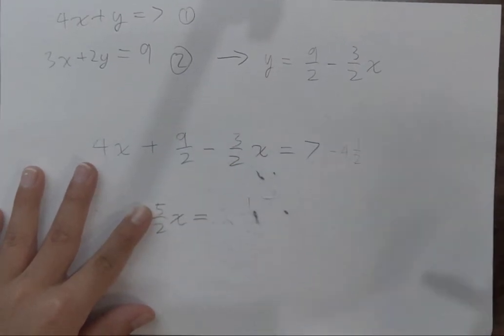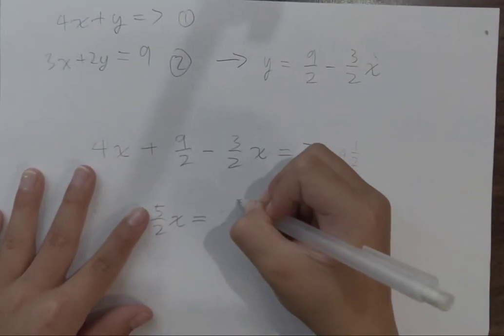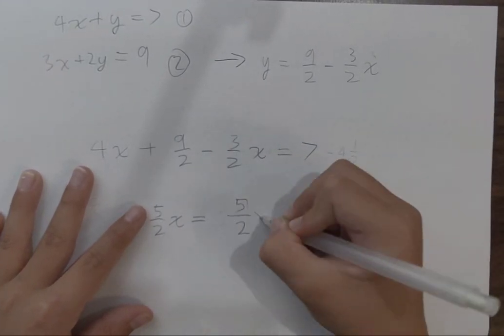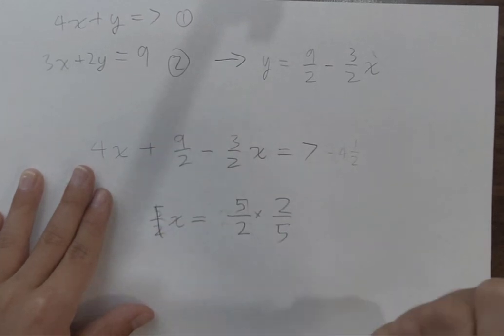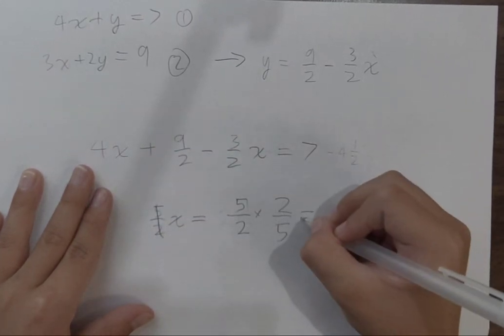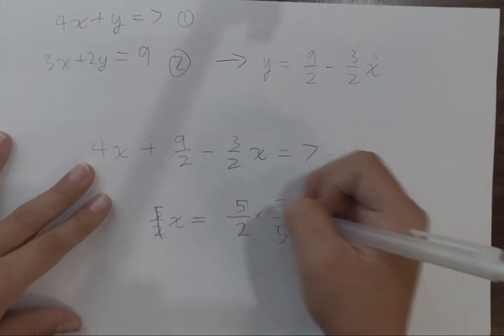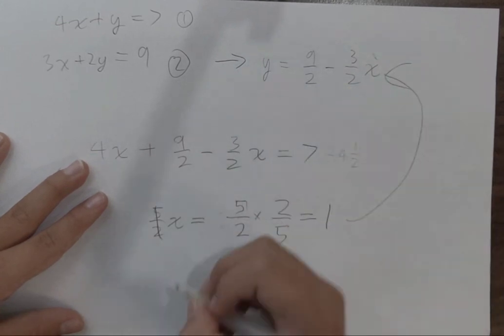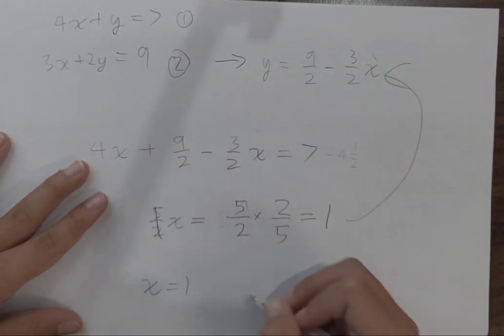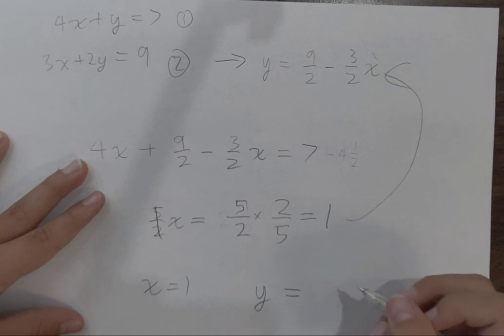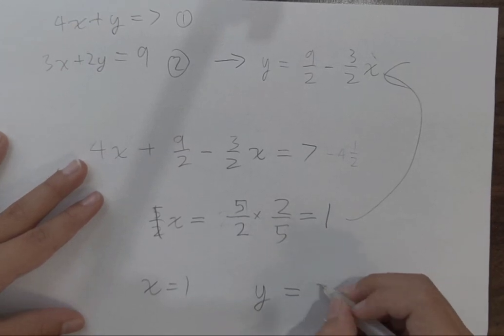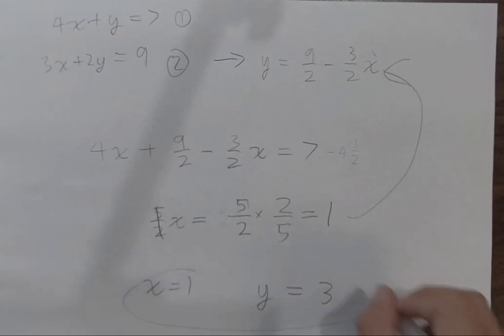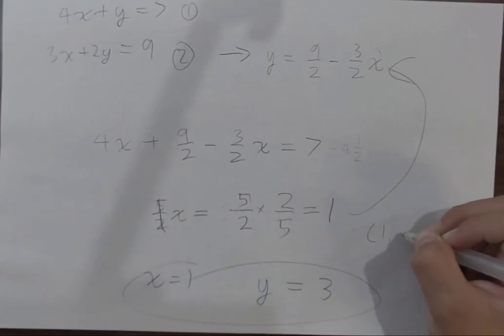Multiply this by 2 and 5, and you get x equals 1. You can input this into either of these two equations. I like to put it here. Then we can solve that y equals 3. So your answer is x equals 1, y equals 3.